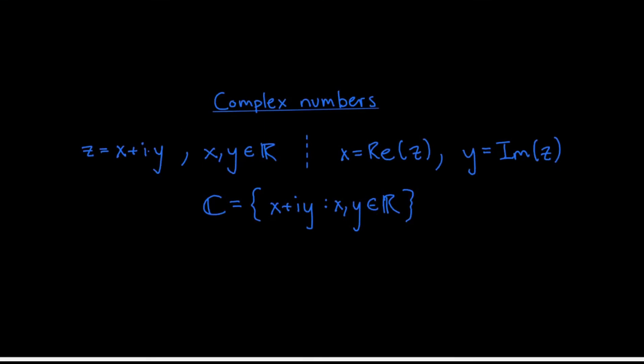First of all, here's something that hopefully all of us are familiar with, and that is the set of complex numbers. As indicated here, the complex numbers are things of the form z equals x plus i y, where x and y are real numbers. The quantity i, of course, is the square root of negative 1, and the main thing that you need to know about it is that when you square it, you get negative 1. Given a complex number of this form, the number x is called the real part of z, and the number y is called the imaginary part of z. The set of all complex numbers is denoted by the symbol blackboard C, as I've written here.